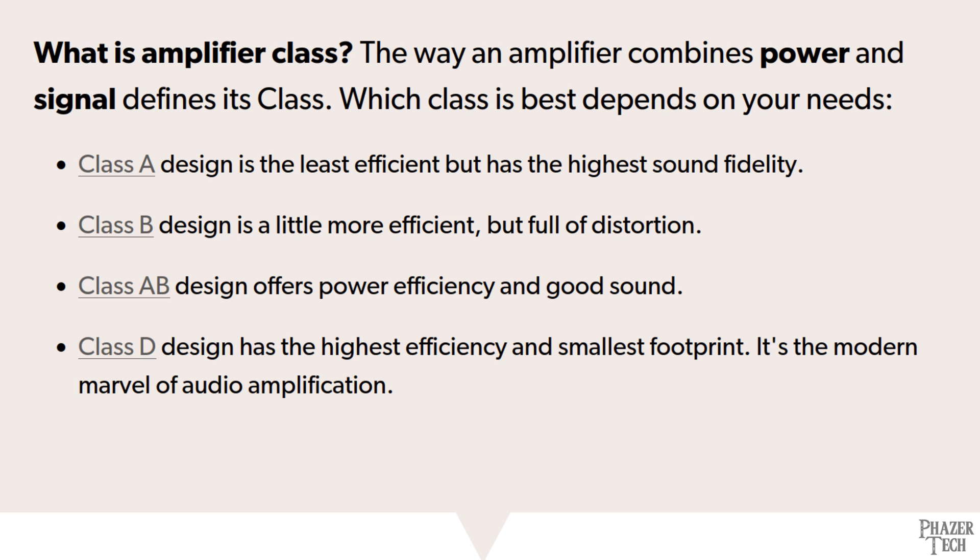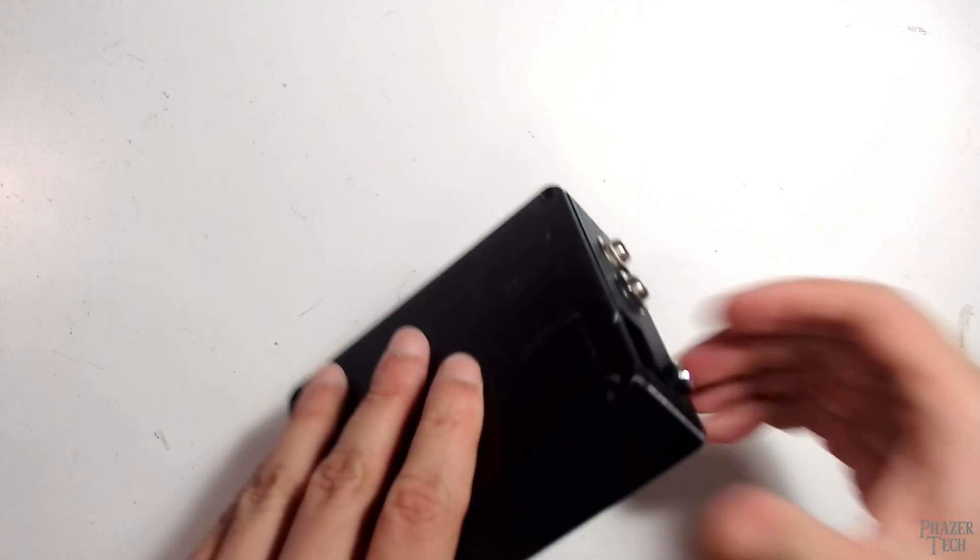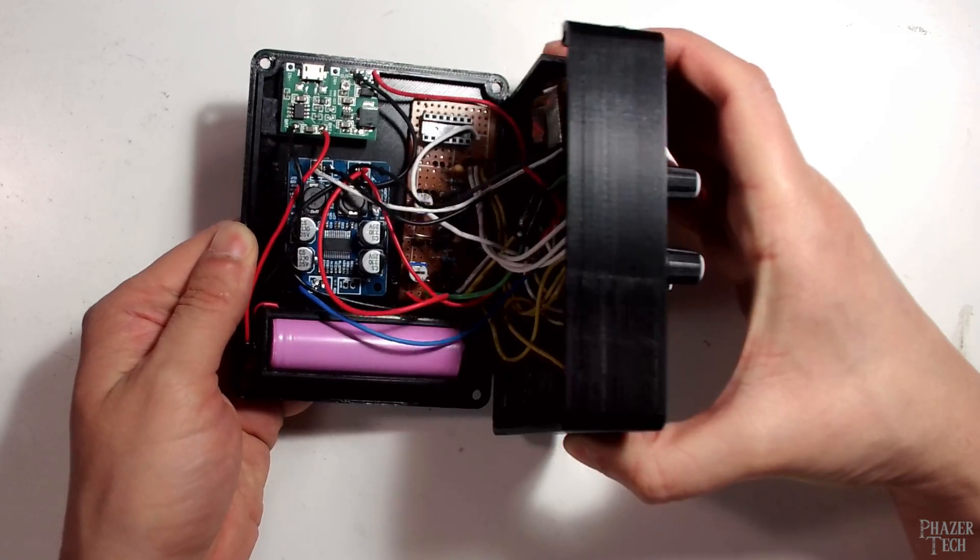The benefit of a class AB amplifier is that they typically sound better than class D amps. However, these days class D amplifiers are a lot better than they used to be. So overall, I think the benefits of using one of these prebuilt boards outweighs the small difference in sound quality. So that's why I'll only be focusing on this amp today. So now let's open this one up and take a look.